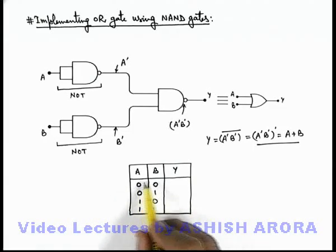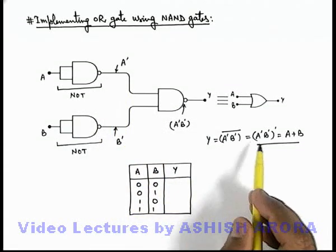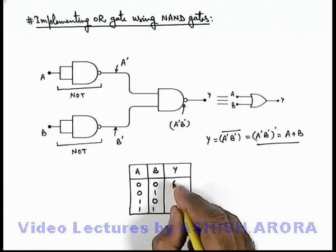Here we can see if A and B are 0 and 0, A prime B prime will be 1 and 1. So the AND of 1 and 1 will be 1, of which the prime will be 0.